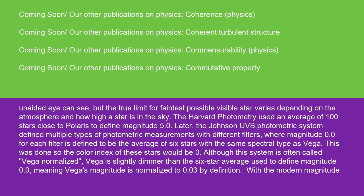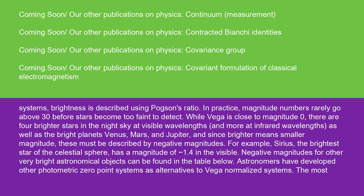With the modern magnitude systems, brightness is described using Pogson's ratio. In practice, magnitude numbers rarely go above 30 before stars become too faint to detect. While Vega is close to magnitude zero, there are four brighter stars in the night sky at visible wavelengths, and more at infrared wavelengths, as well as the bright planets Venus, Mars, and Jupiter. And since brighter means smaller magnitude, these must be described by negative magnitudes.